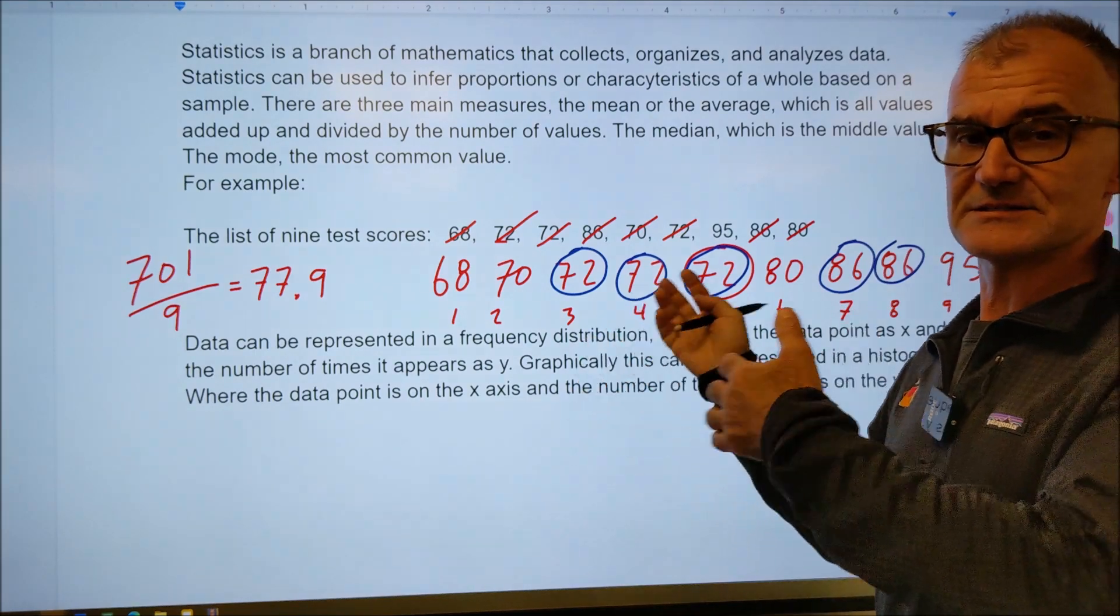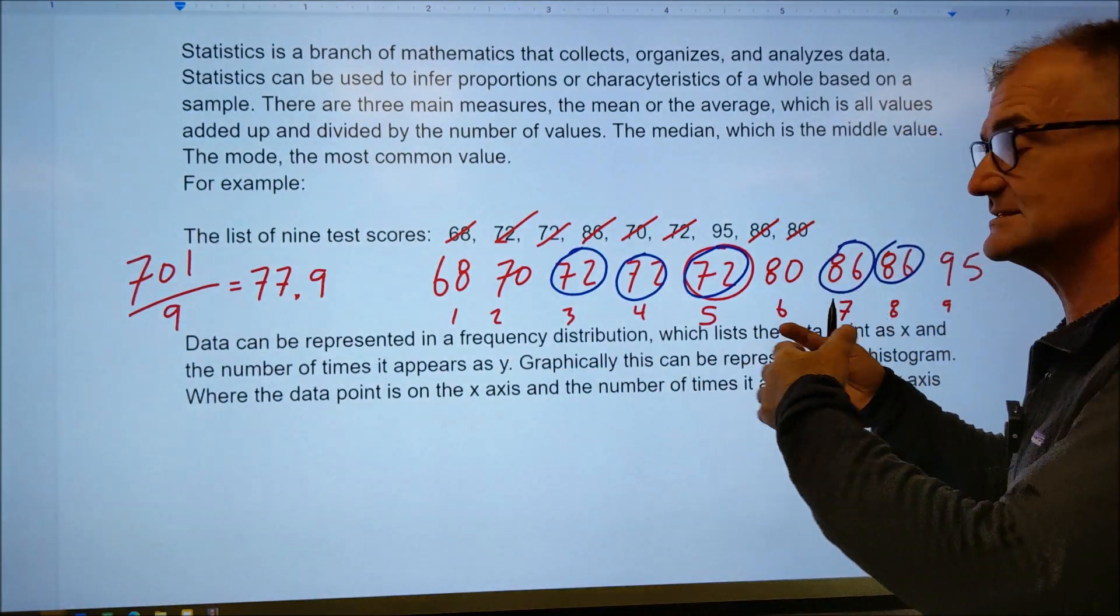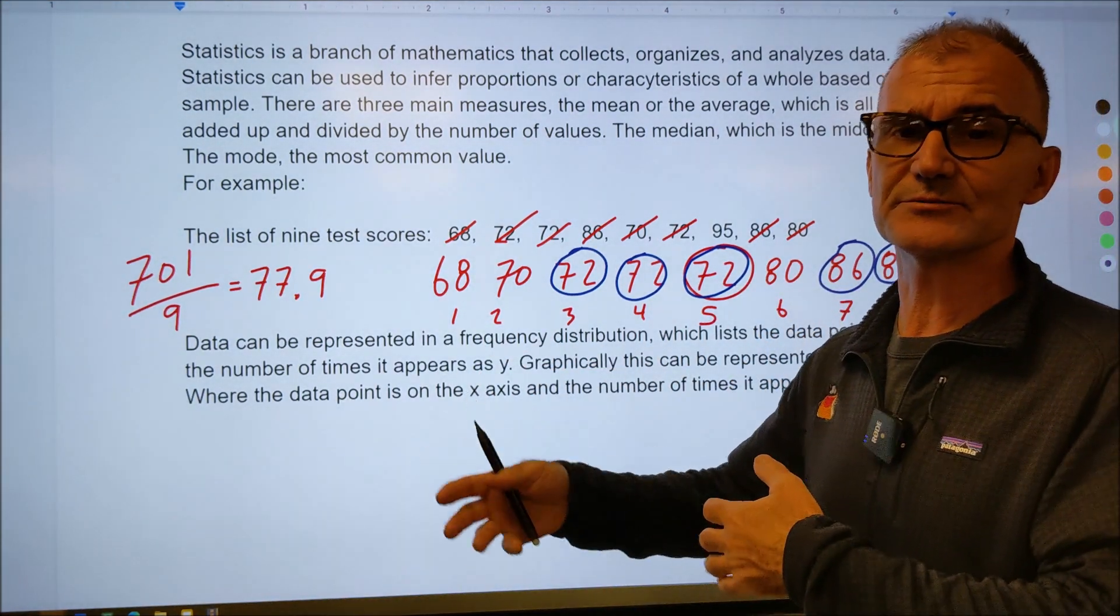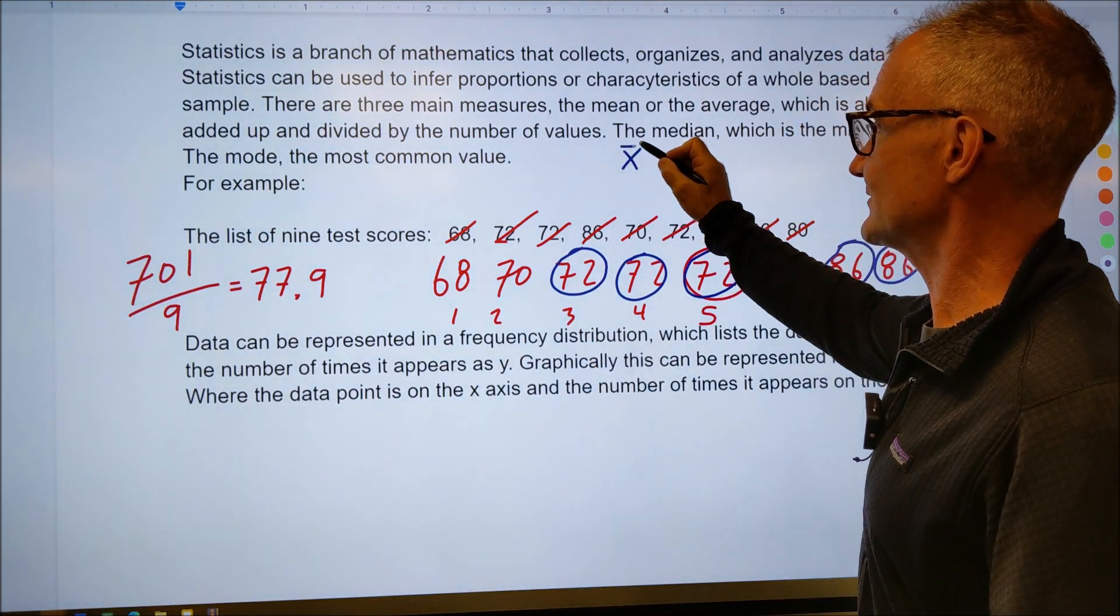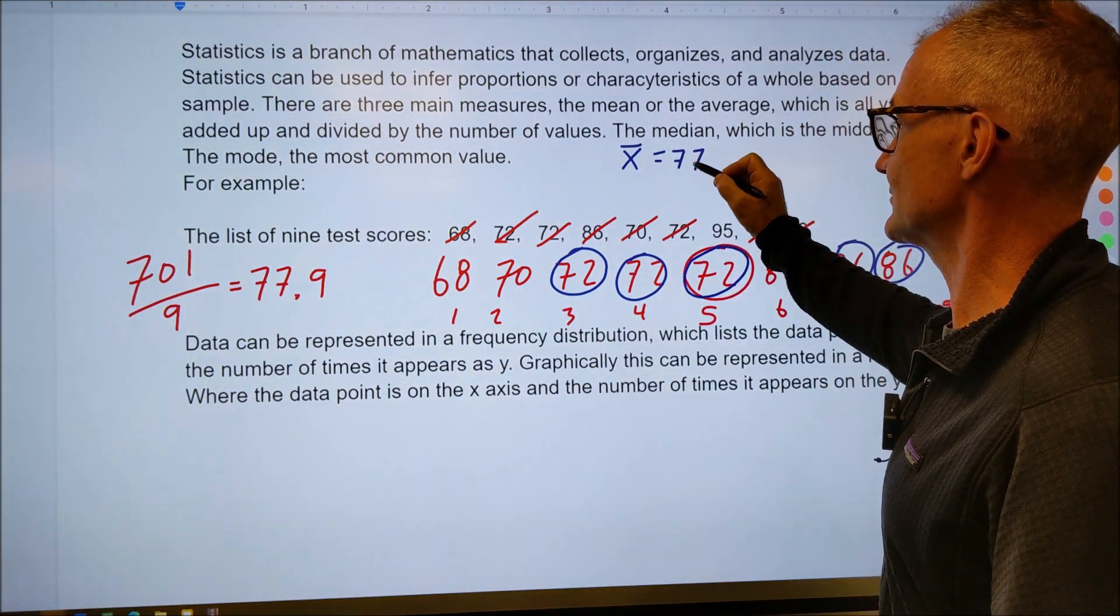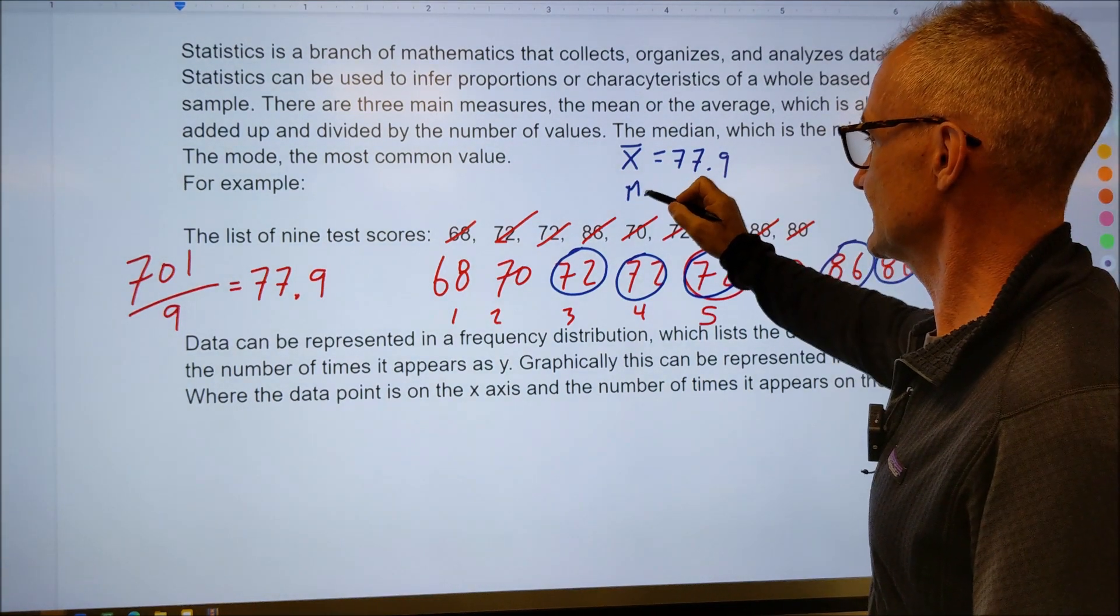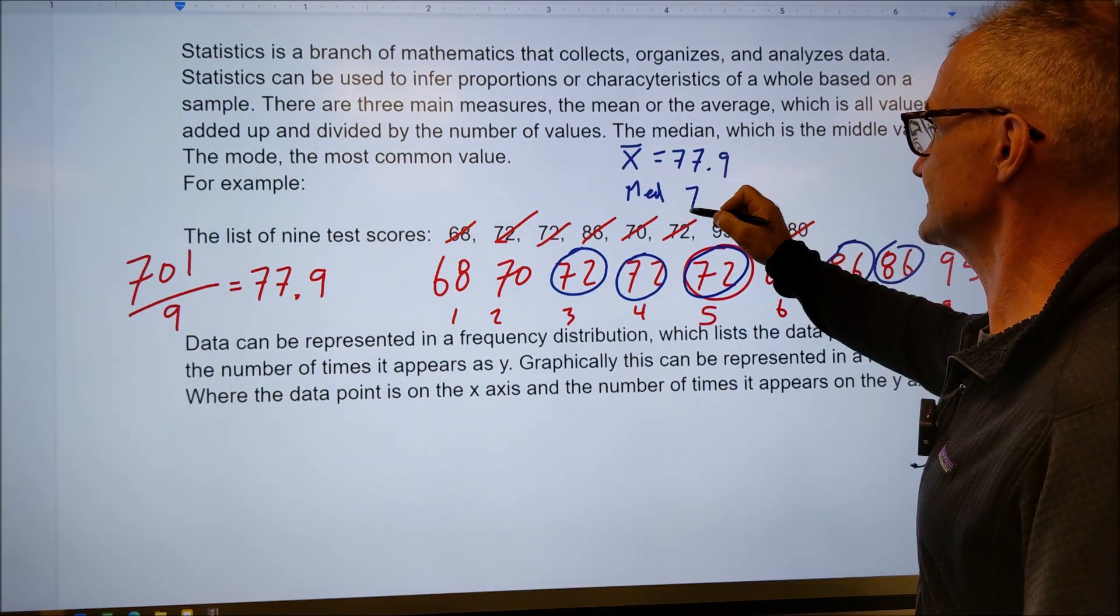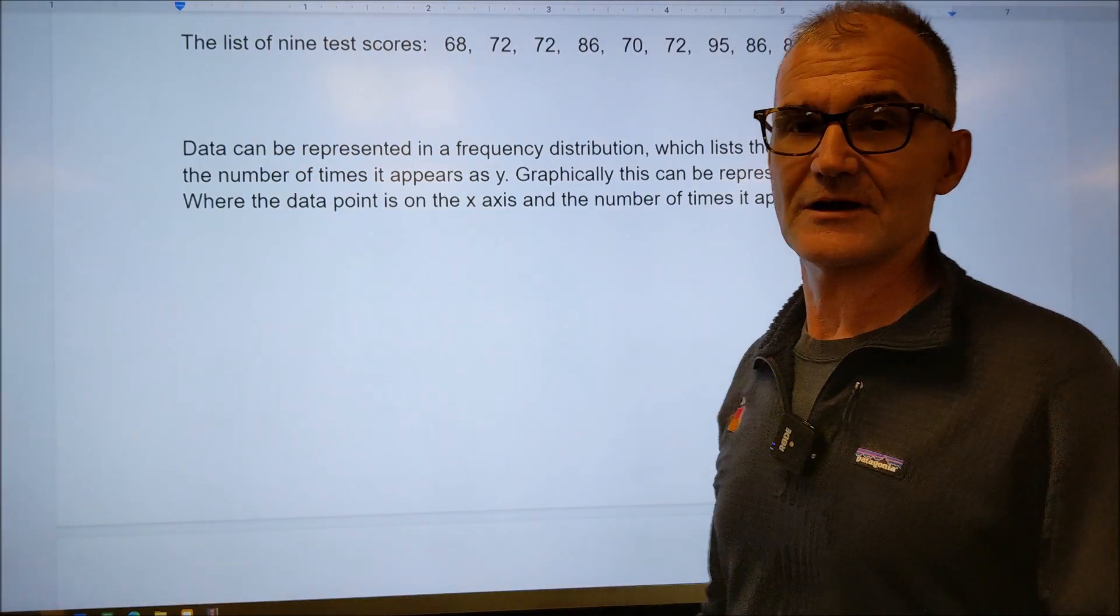If a set of data has say three values of 72 and three values of 86, it can be called bimodal, meaning that there are two modes. But in this case, the way you write it out is the average x bar is 77.9. The median is that middle number. The median in this case is 72. And then the mode is also 72.